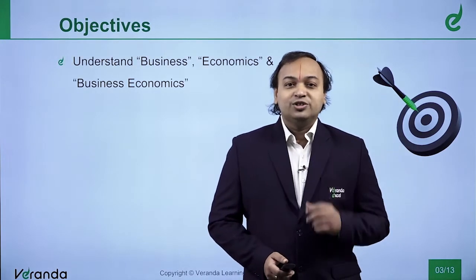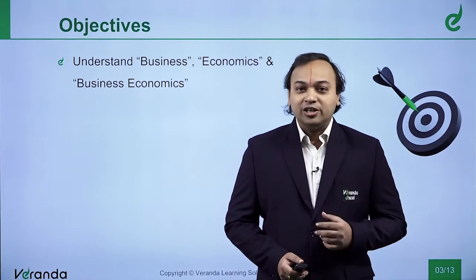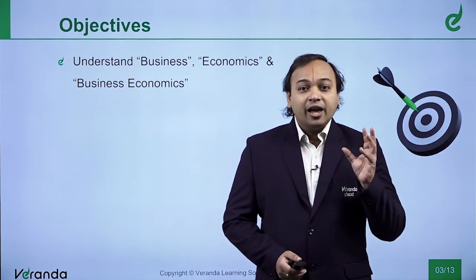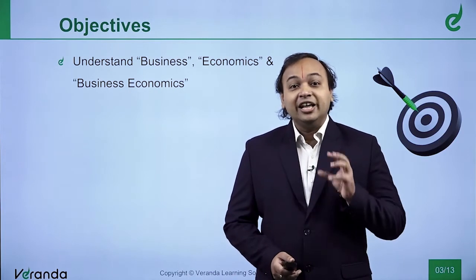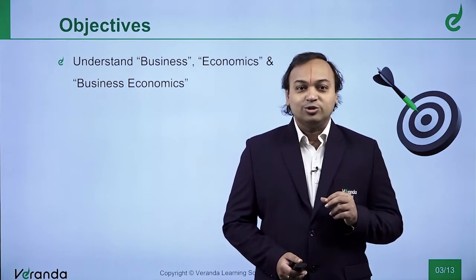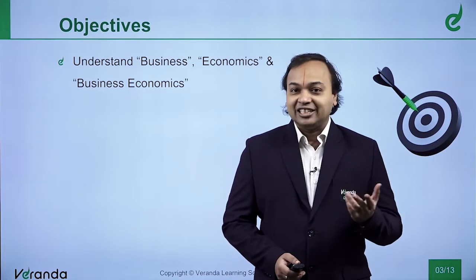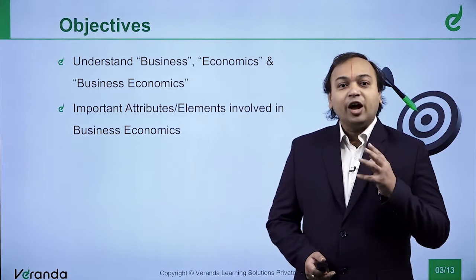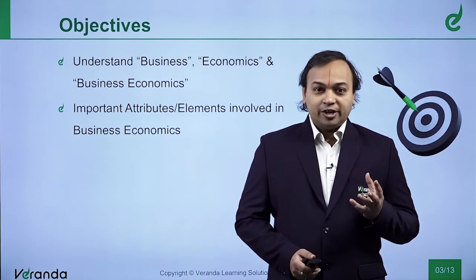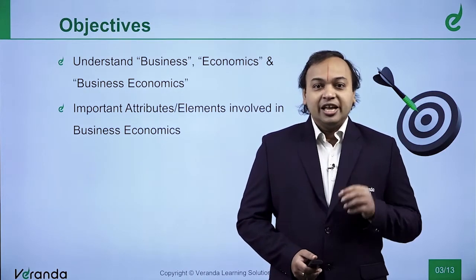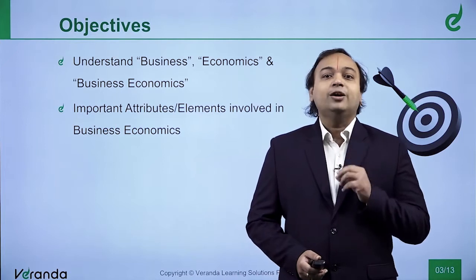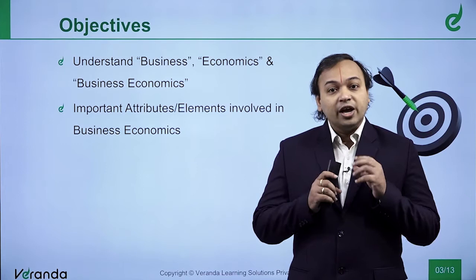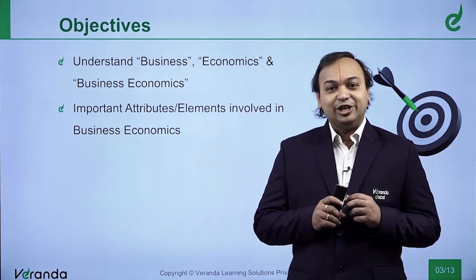There are a few terms which are involved in business economics. The two terms are: number one, business, and the next one is economics. Putting together, we have a derived word called business economics. We will first try to understand that, and then having understood business economics, we have to understand the important attributes or elements involved in the term business economics. This is the two primary focus we are going to cover in this study note.